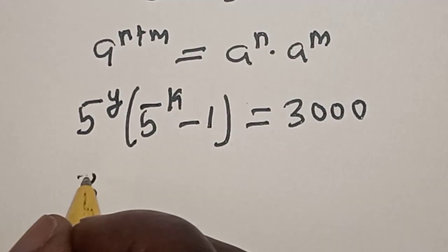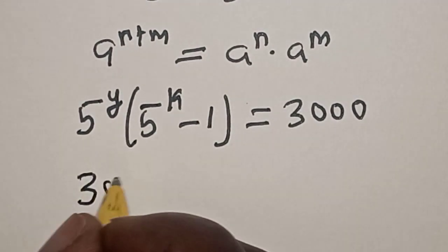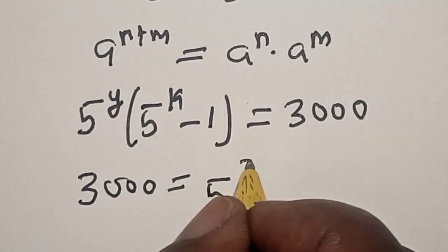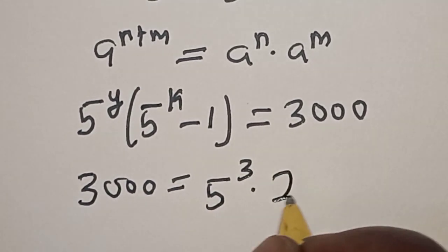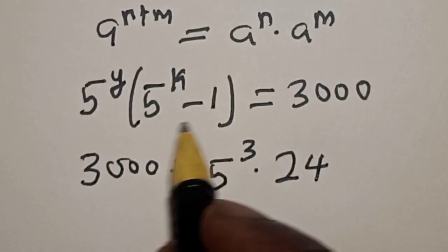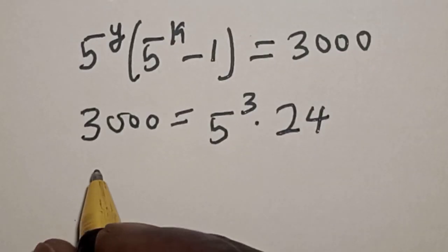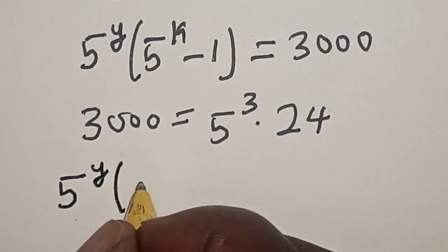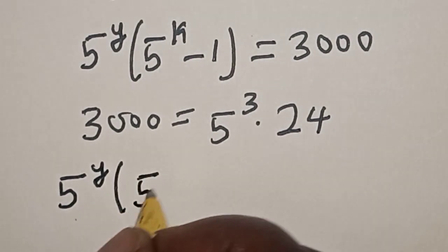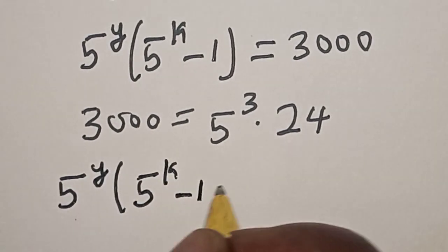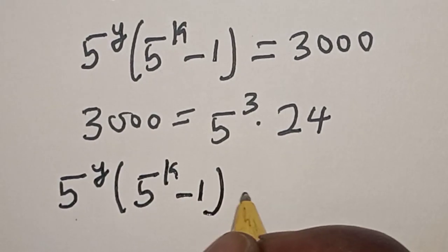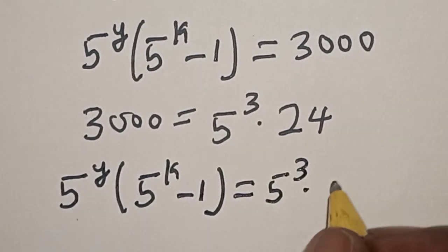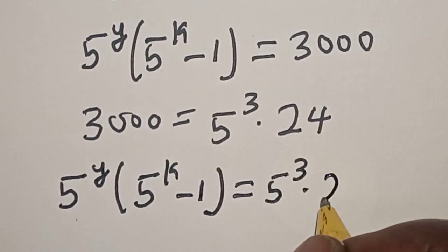This 3,000 can also be expressed as 5 raised to power 3 multiplied by 24. So we want to manipulate this: 5 raised to power y into 5 raised to power k minus 1 is equal to 5 raised to power 3 multiplied by 24.